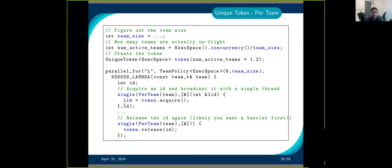Here's what's happening: you acquire the ID and then use the single function we saw earlier to broadcast the value. Then use another single to release it. You want a barrier here so that you don't release the ID while some threads are still using it.